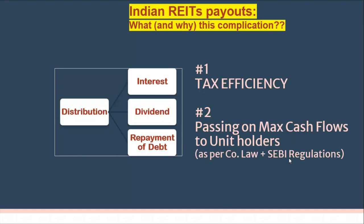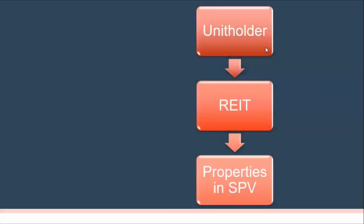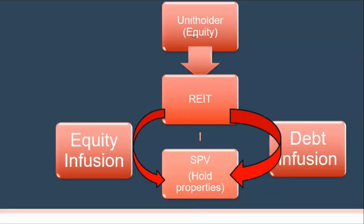This structuring lets a REIT do exactly that. If you look at the structure of a REIT, the unit holder puts money into the REIT, and the REIT does not really hold properties directly. In India, there are special purpose vehicles — companies formed specifically for the purpose of holding properties, getting rents, and distributing them upwards to the REIT and then to the unit holders.